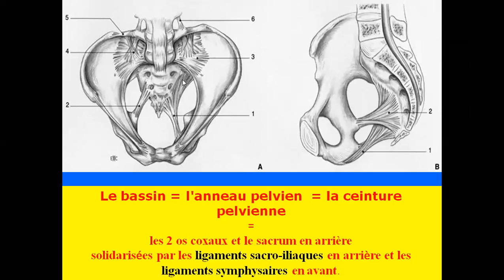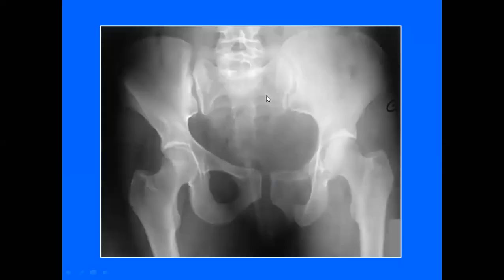Ces ligaments sont très épais et très puissants ; il n'est pas facile de les rompre ou de les déchirer. Sur cette radiographie, on voit un bassin chez un adulte avec les deux os coxaux droit et gauche, la symphyse pubienne en avant, les articulations sacro-iliaques droite et gauche.